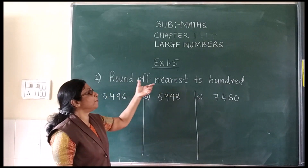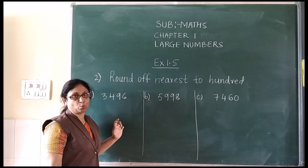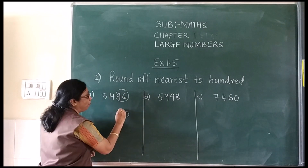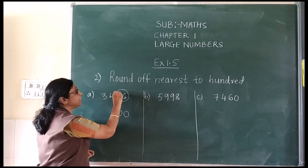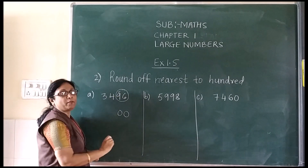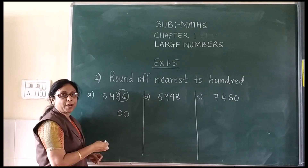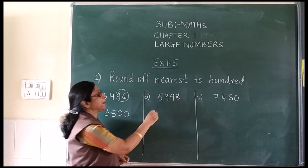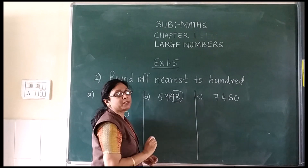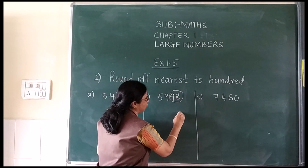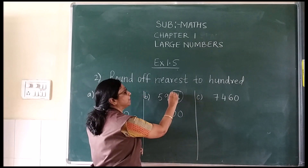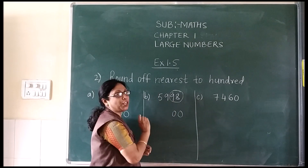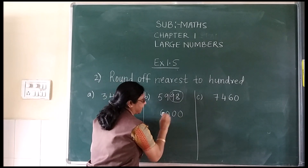Now we will see round off nearest to 100. 100 has how many zeros? 2. So we will circle 2 digits from the right and place 2 zeros below that number. Now see the first number in the circled digits — it is 9, which is more than 5. So add 1 to 59. 59 plus 1 = 60.